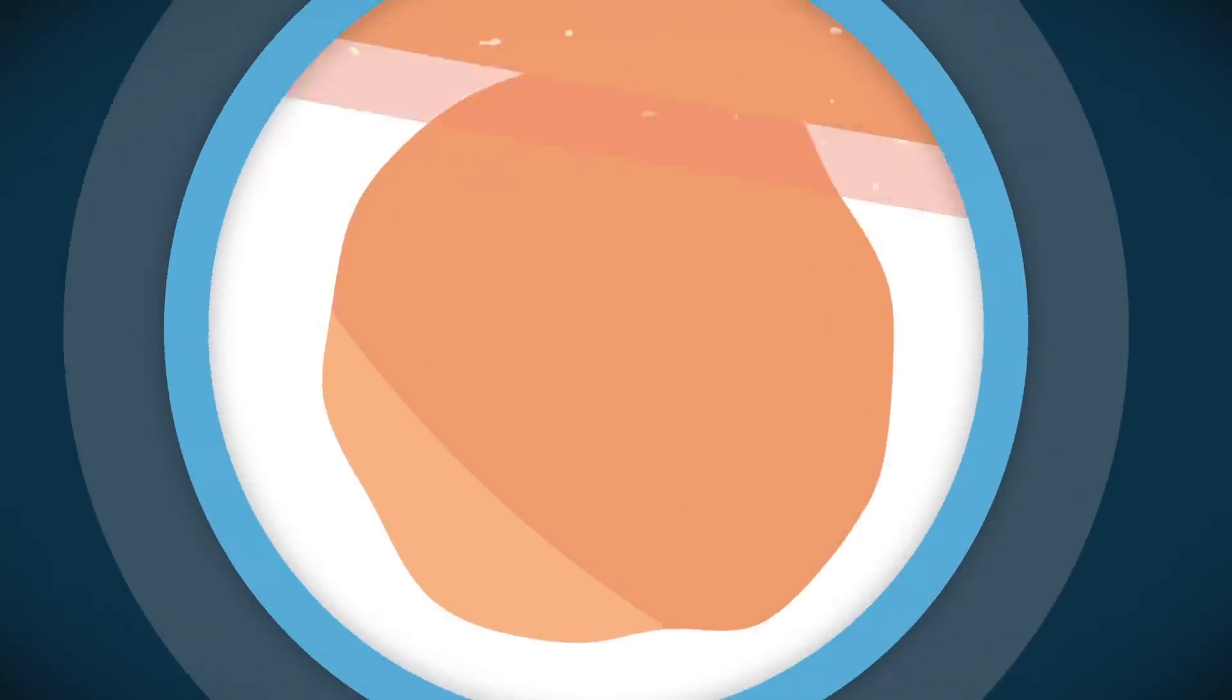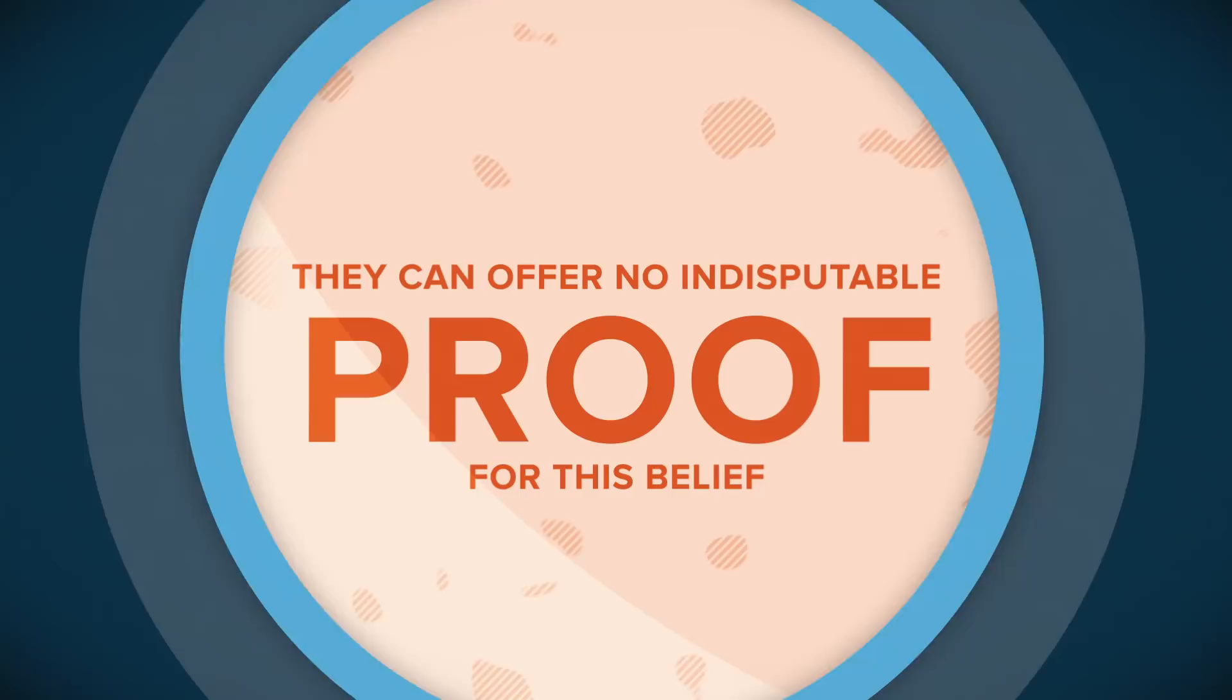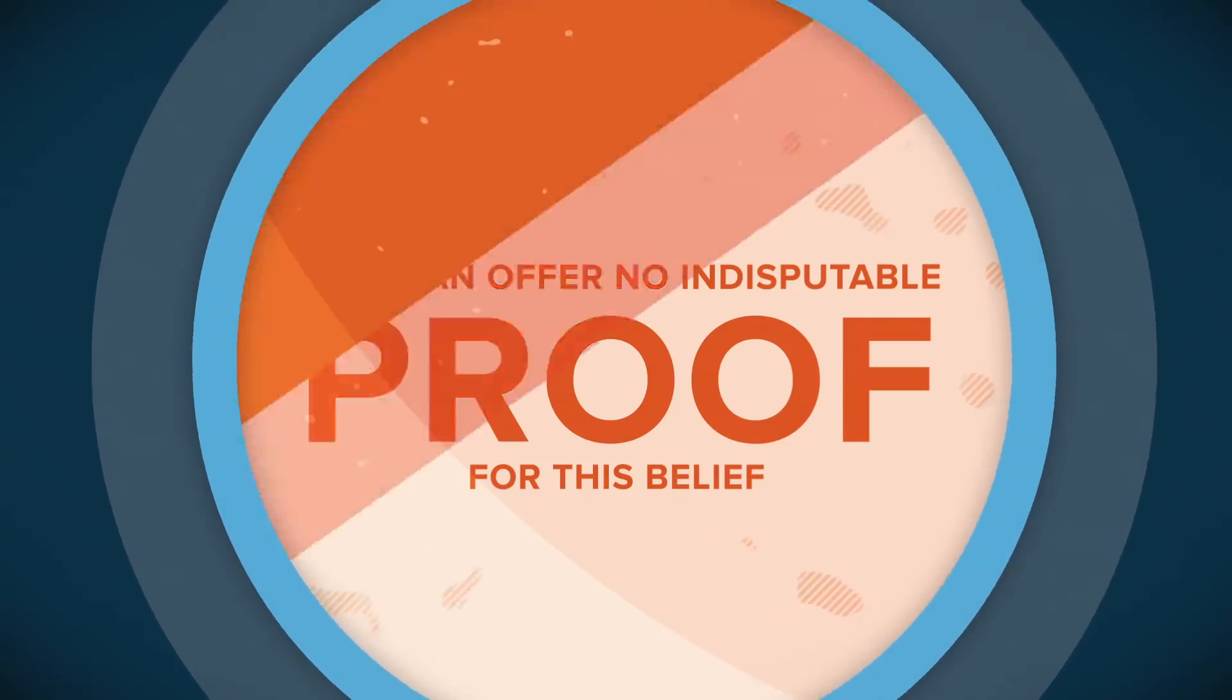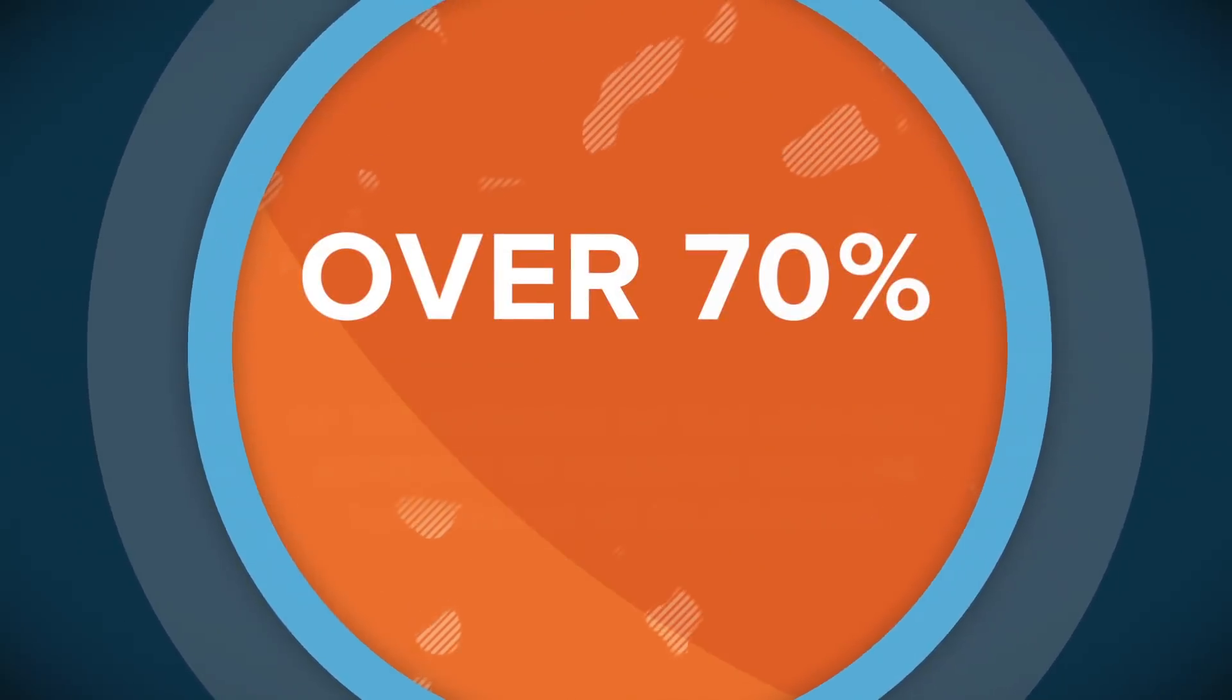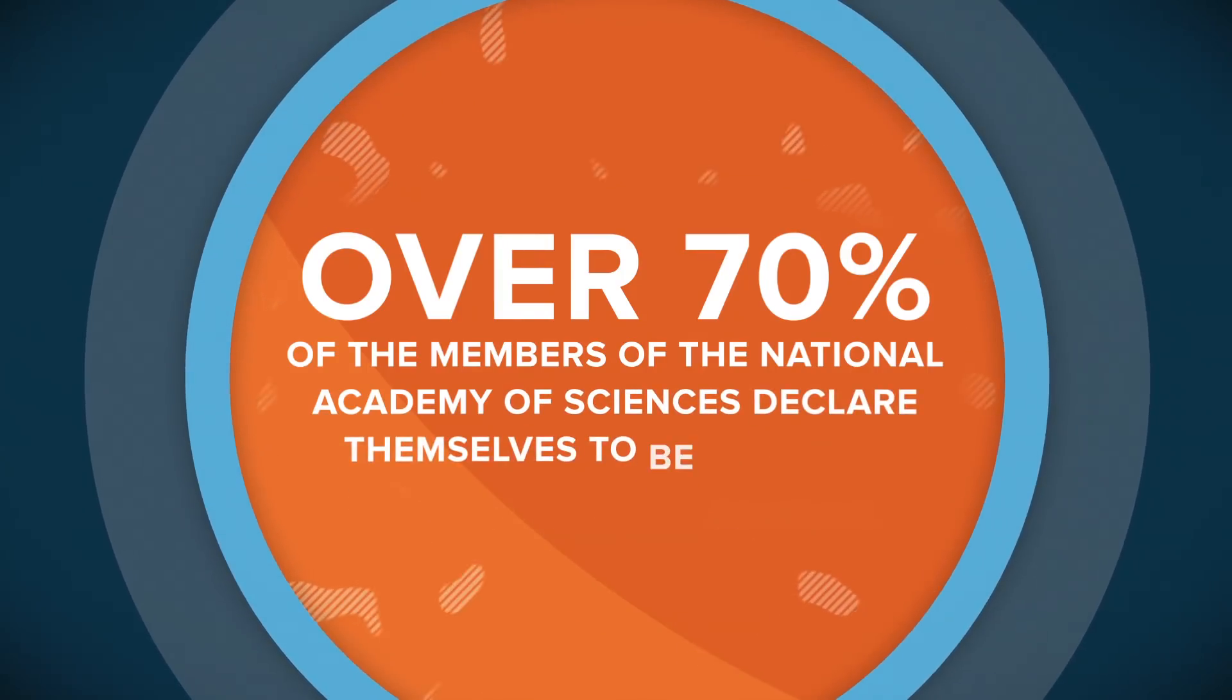But from a purely scientific point of view, the faithful have a big problem. They can offer no indisputable proof for this belief. Because of the lack of hard evidence, it's probably not surprising that over 70% of the members of the National Academy of Sciences declare themselves to be atheists.